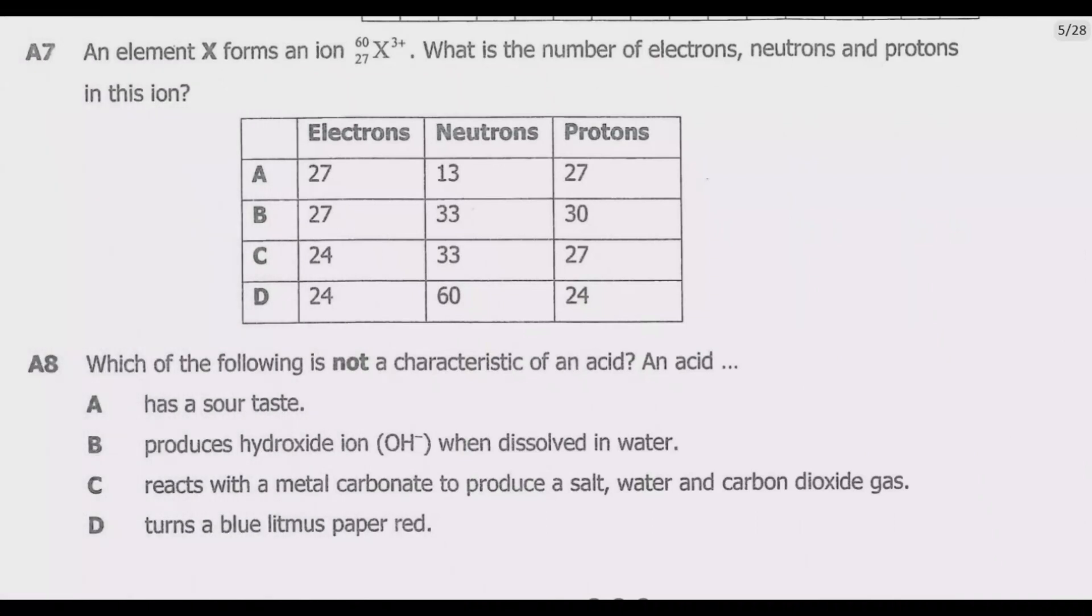So let us dive straight into question A7. An element X forms an ion with a positive 3 charge. It has a mass number of 60 and an atomic number of 27. What is the number of electrons, neutrons, and protons in this ion? The question is asking us to find the number of electrons, neutrons, and protons in this ion.